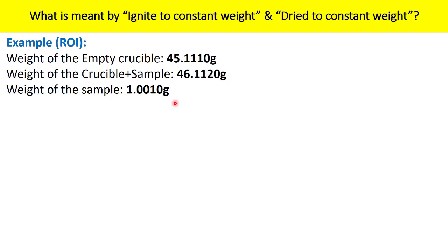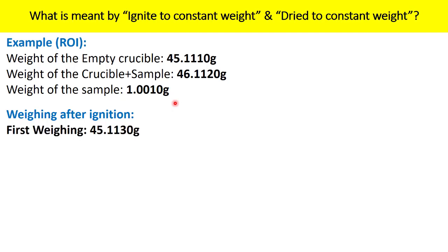Once you have the initial weighing done, you treat the sample according to your test procedure — igniting at 800 degrees Celsius for one hour. Once the ignition period is over, you cool the crucible inside the desiccator, because the crucible must not absorb moisture. That is the purpose of cooling inside the desiccator. Once cooled, you weigh the crucible — that is your first weighing after ignition. Let us say the weight of the first weighing is 45.1130 gram.